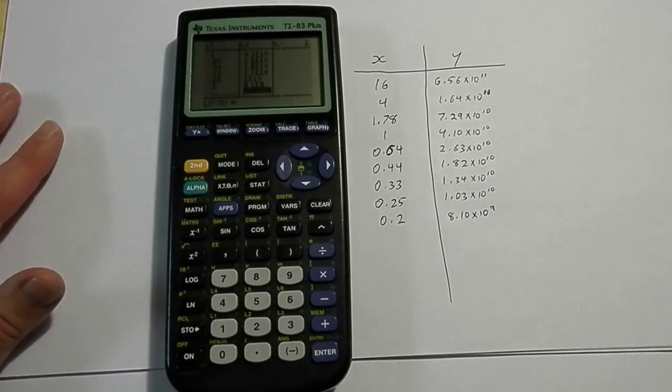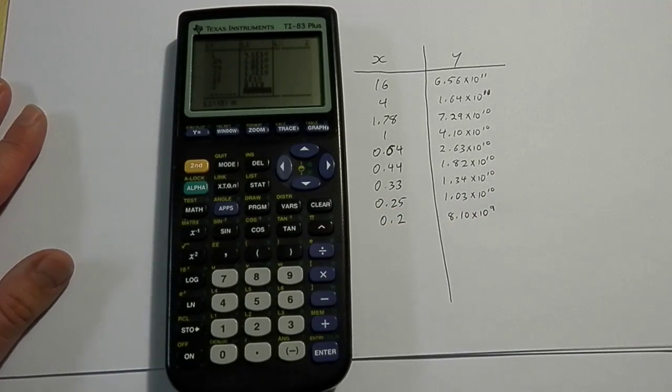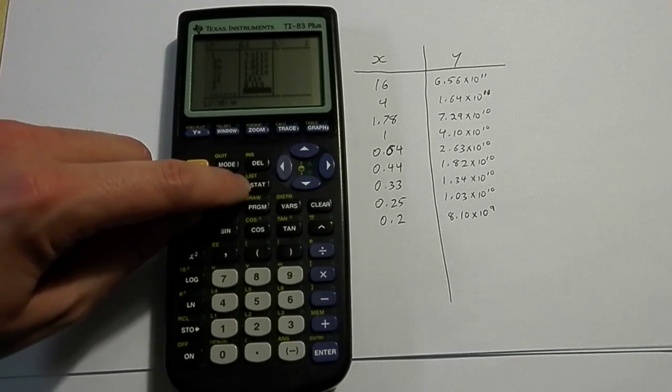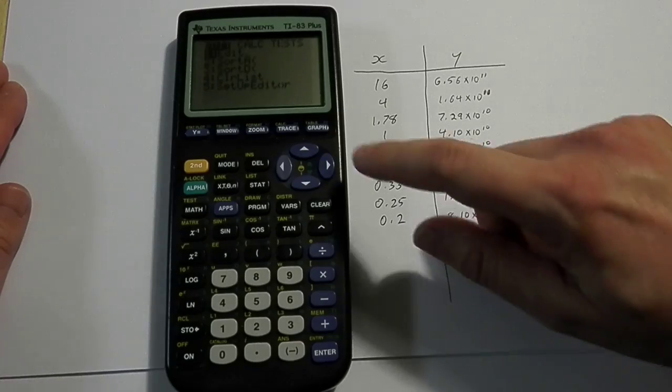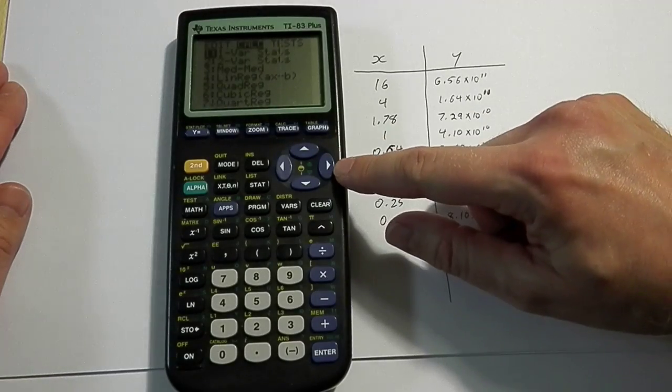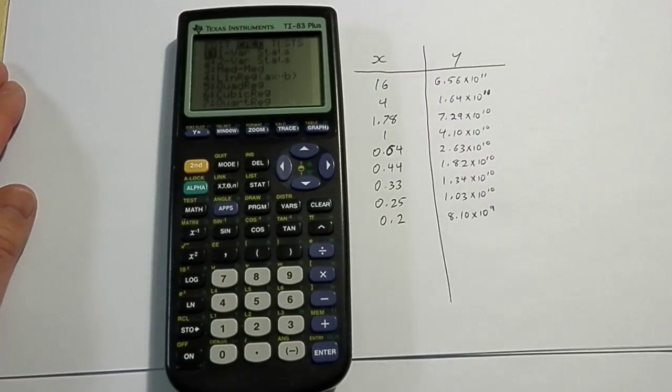Okay, I've got all my numbers entered in now. So at this point, what I would want to do is hit the stat button again to go back into the stat screen. And now I want to actually calculate. So I use the arrow button to move over one spot into calculate.